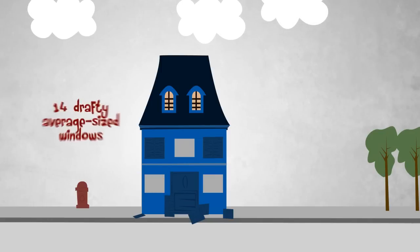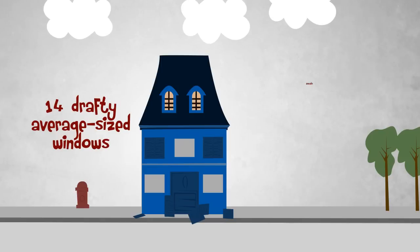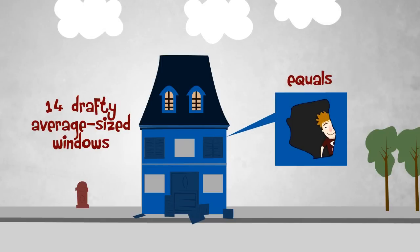Smart knows that having just 14 average size windows that are drafty may be equivalent to having a hole in the side of his home the size of one of his windows.